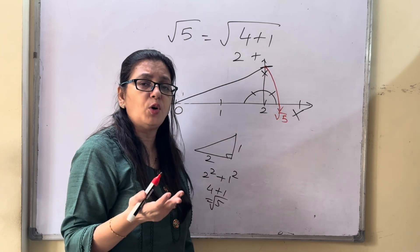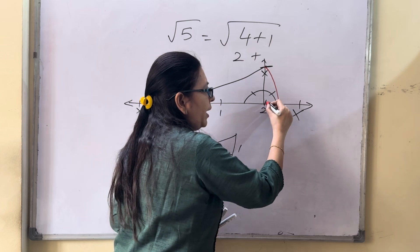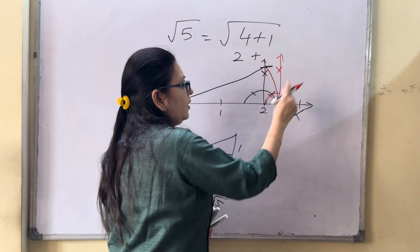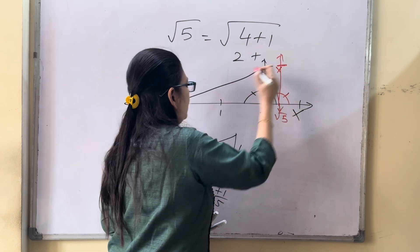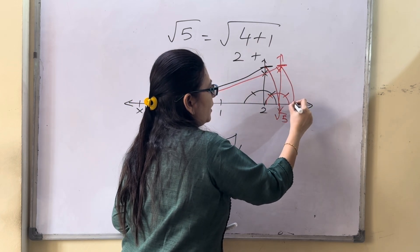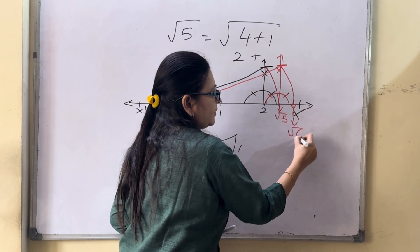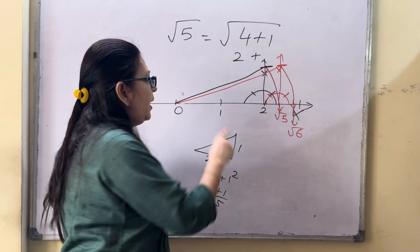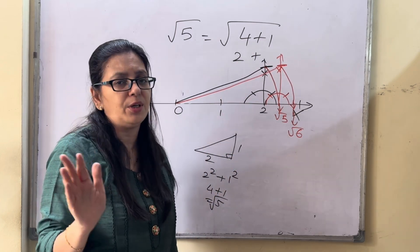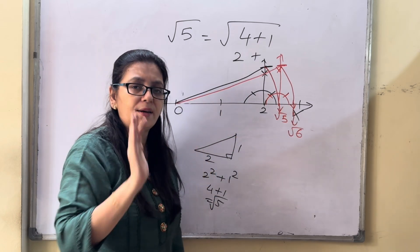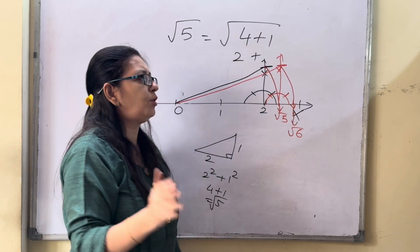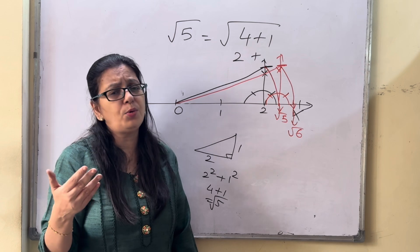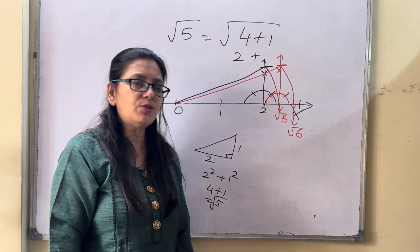For root 6, from where root 5 touches the x-axis, draw arcs at 60 and 120 degrees, draw the bisector, take 1 unit measurement, cut it, and join the line — this becomes your root 6. So always the first step is to bifurcate as something plus 1, then apply the Pythagorean theorem to draw all irrational numbers. In exams you typically get root 2, root 3, root 5, root 6, root 7, or root 10.